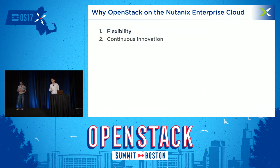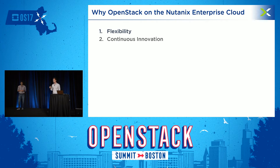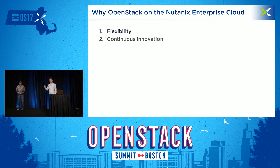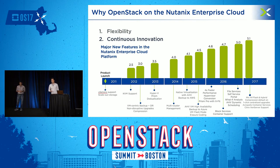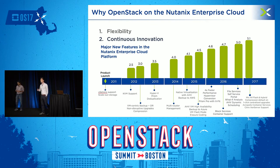Why should you run OpenStack on an enterprise cloud platform powered by Nutanix? First, flexibility — one of the top reasons in the last OpenStack survey why customers look into OpenStack. Because you can run the Nutanix OS on multiple hardware types and multiple hypervisors, we double down on that promise. Second, continuous innovation — over the last five years at Nutanix, we release two major software versions every year, and with each version you get new features and functions that empower your IT services.